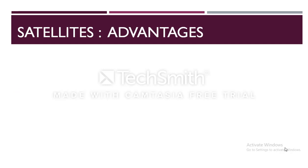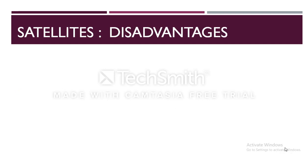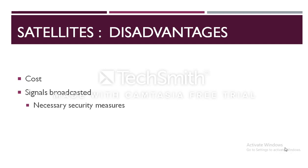Some of the advantages of satellites are: satellite communication is very economical, keeping in mind the fact that the area covered through satellite transmission is quite large. For example, satellites used for national transmission are visible from all parts of the country. Transmission and reception costs are independent of the distance between the two points. Some of the disadvantages are: placing the satellite into its orbit involves very high cost. Since signals sent to the satellite are broadcasted to all receivers, necessary security measures have to be taken to prevent unauthorized tampering of data. Transmission is also affected by weather conditions like rain, thunderstorms, etc.